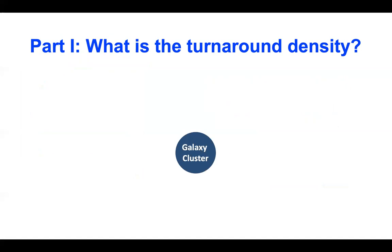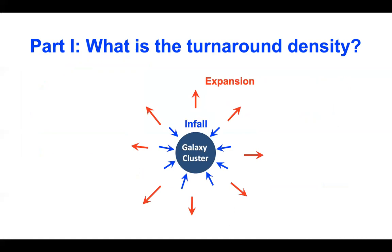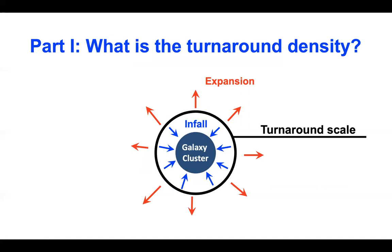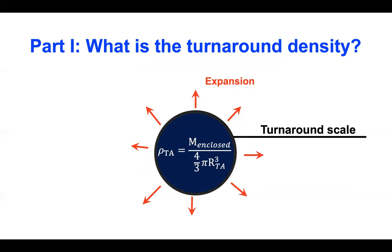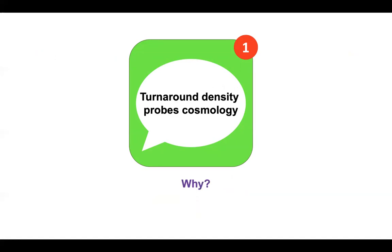Let me start by introducing the turnaround density. I have a galaxy cluster with the expanding universe around it. Go far enough and you have Hubble flow. But close to the cluster, you still have material infalling, and the boundary between them is the turnaround scale. When I talk about turnaround density, I mean the mean matter density — the average matter density within the turnaround sphere: all of the mass enclosed by the turnaround sphere divided by its volume. I am not referring to the local density of the turnaround shell, but the mean matter density within the entire sphere. And it is that density that probes cosmology.